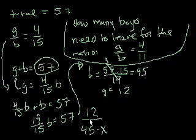Now if that confuses you, sit and look at that for a second. We start off with 12 girls and 45 boys in the room. And we're saying that x boys are going to leave. So the new ratio is going to be 12 to 45 minus x. And we know from this part of the problem that that new ratio is going to equal 4 to 11.